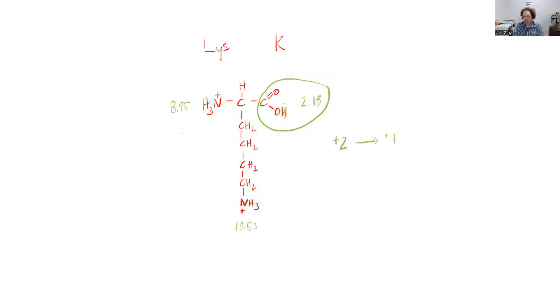The next group that you're going to deprotonate actually takes a while to get to, and that's your N-terminus. The N-terminus pKa of 8.95 indicates that it's going to be the second group that's deprotonated.